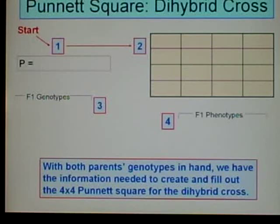Okay, we finished part one, so we move on to part two. With both parents' genotypes in hand, we have the information needed to create and fill out the 4x4 Punnett square for the dihybrid cross.